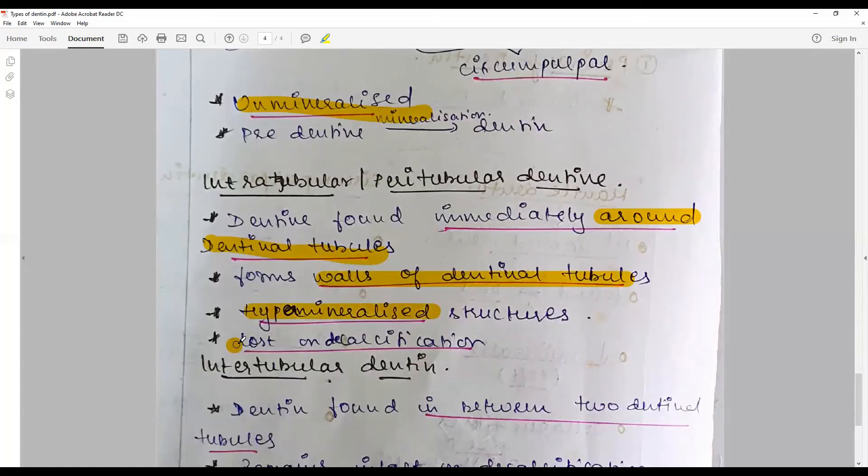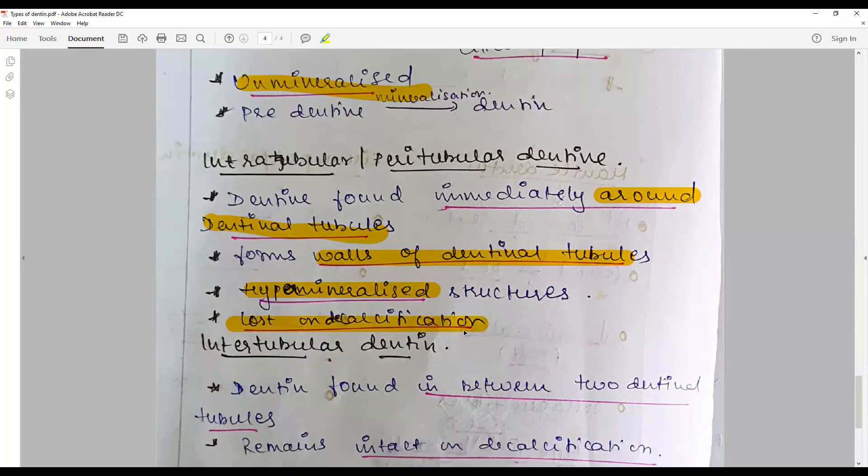Whereas intertubular dentin is lost, this procedure paves way for our clinical significance of acid etching phenomenon. Very important point: the difference in this classification and decalcification is utilized for acid etch phenomenon in restorative dentin.